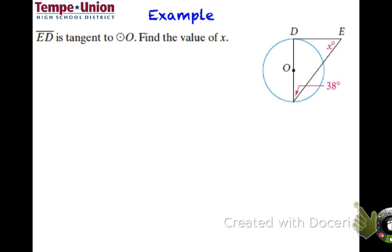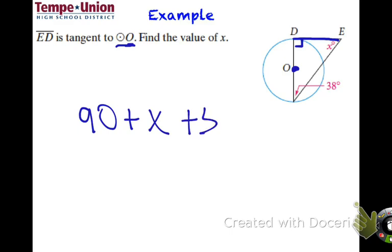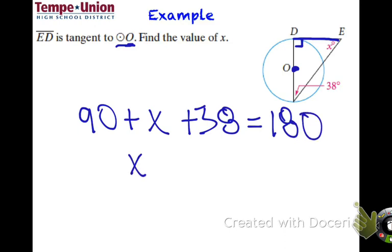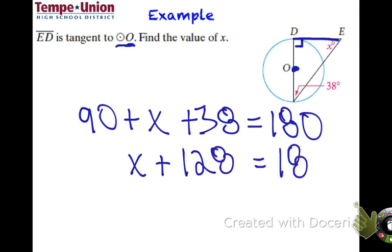Let's start finding some values. Say that ED is tangent to circle O. Find the value of x. If ED is tangent, that creates a 90-degree angle there. Since we have a triangle, we add the angles: 90 plus x plus 38 equals 180. That gives us x plus 128 equals 180, so x equals 180 minus 128, which is 52.